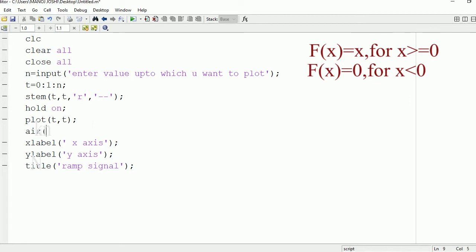Now after that, if you want to change the axis, then this can be done using the axis command. Axis - you need to write the x limit. So here I'm writing x limit from minus two to n, and y limit also from minus two to n. So enter value five. This is from minus two to n.